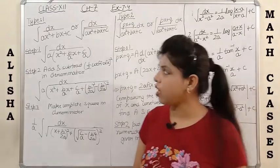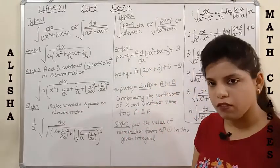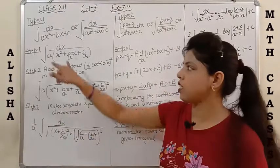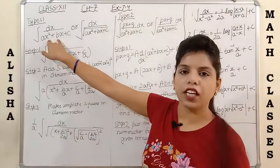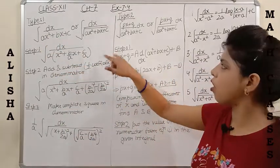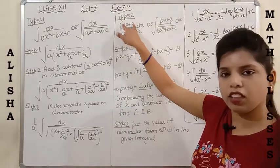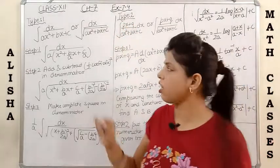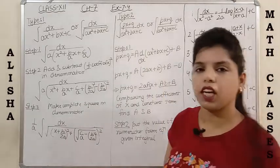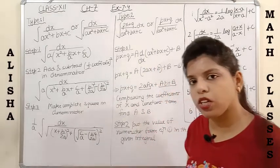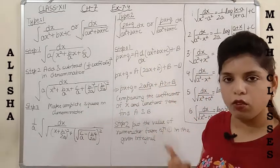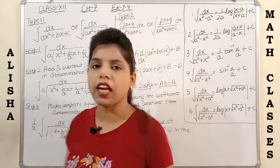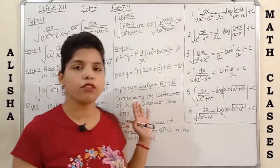From question number 10 onwards, you will see in the book that the questions are of this type — we are having a quadratic equation in the denominator, or we are having a linear equation in the numerator and a quadratic equation in the denominator. So there is a perfect method or algorithm for these type of questions that you have to follow.